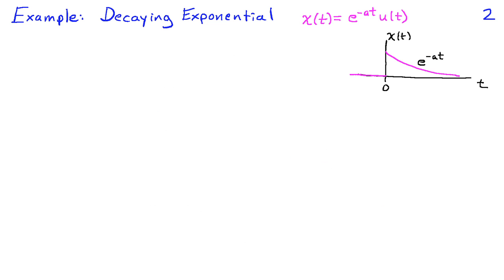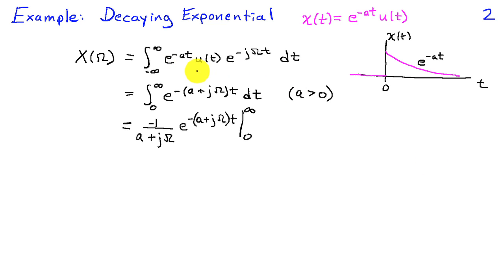We're going to do some examples. I'm going to start with a signal that's a decaying exponential. So x of t is going to be e to the minus at times u of t. This signal is off until time zero because of the step function u of t, and then it takes on the decaying exponential shape. The fact that it's decaying implies that a has to be greater than zero. If we substitute this expression for x of t into the definition of x of omega, we only need to integrate from zero to infinity because the step function makes everything zero for negative time.